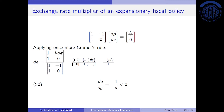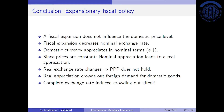Since all Greek parameters are positive, the expression in equation 20 is negative, indicating a negative relationship between government spending and the exchange rate. A fiscal expansion does not influence the domestic price level, but it decreases the nominal exchange rate — the domestic currency appreciates in nominal terms. Since goods prices are constant, this nominal appreciation also leads to a real appreciation. When the real exchange rate changes, purchasing power parity (PPP) does not hold.